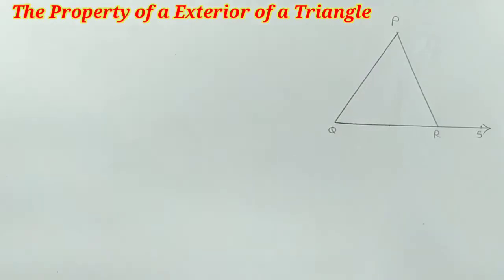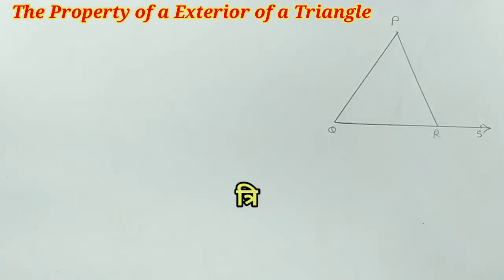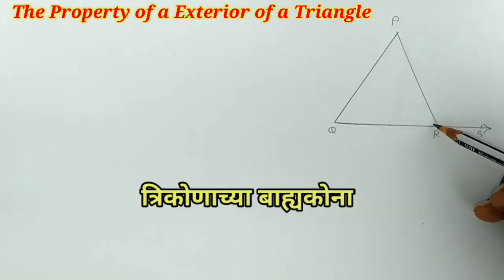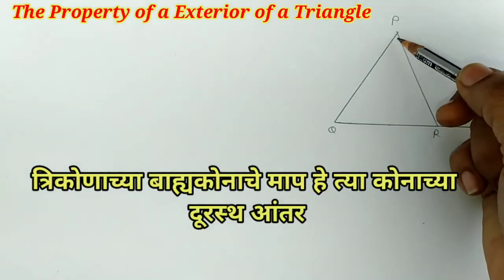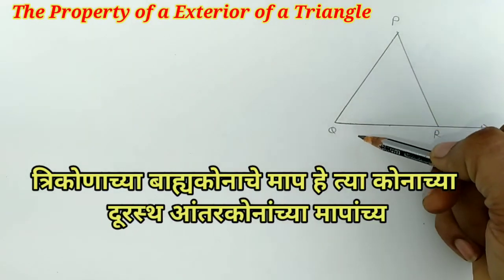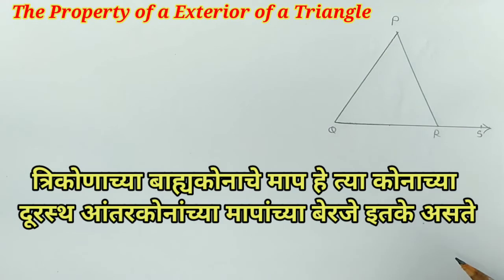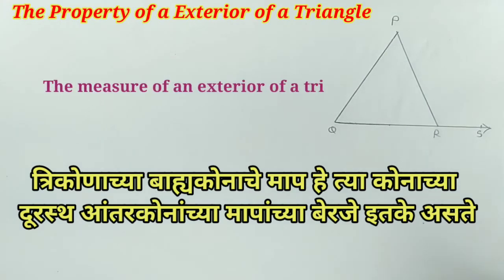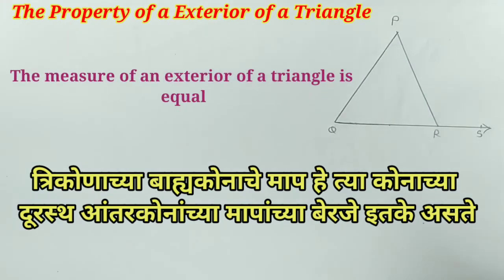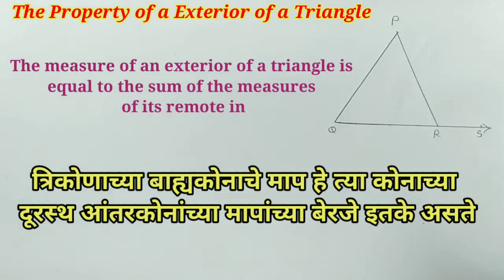Then we learn the property of the exterior angle of a triangle. The measure of an exterior angle of a triangle is equal to the sum of the measures of its remote interior angles.